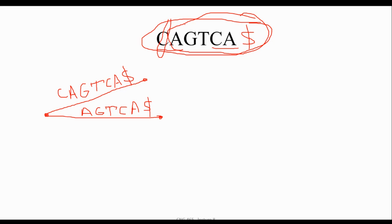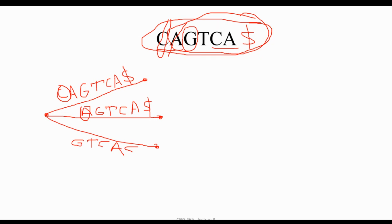We continue and start from G. I check whether I have the same nucleotide in other edges or not — we don't, so it's possible to continue, and I consider GTCA$ for the next one. Again we have another new nucleotide so it's possible to have the fourth edge with no problem.